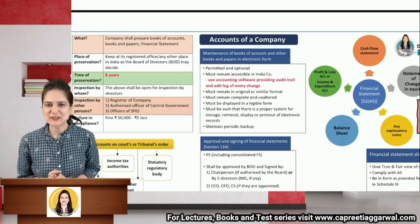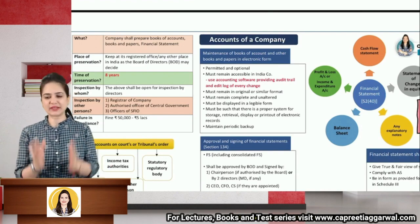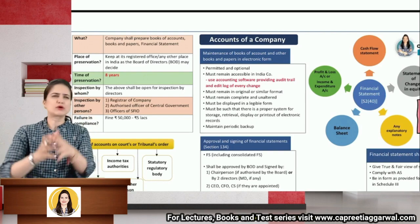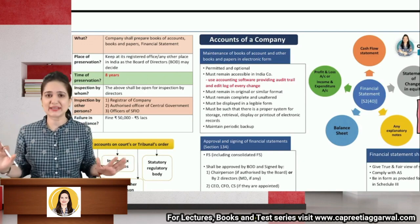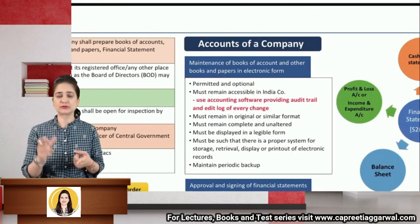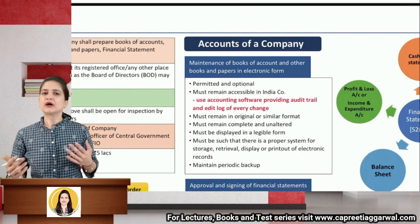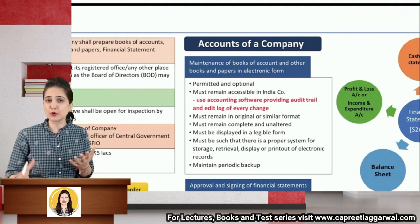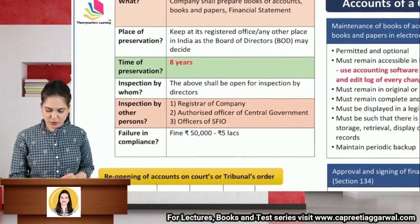Let us discuss one very interesting topic: accounts of company. The last three chapters are very important for exam because most of the time questions come from those units only. You can expect one or two questions from these three units — case-based questions, theory, MCQs, or case-based MCQs. In accounts of companies we will discuss books of accounts, how they are maintained, for how many years, reopening of books, what is NFRA, and other documents the company needs to maintain.